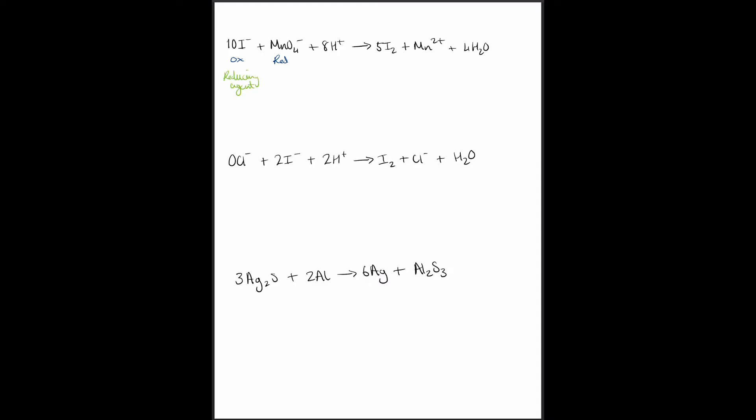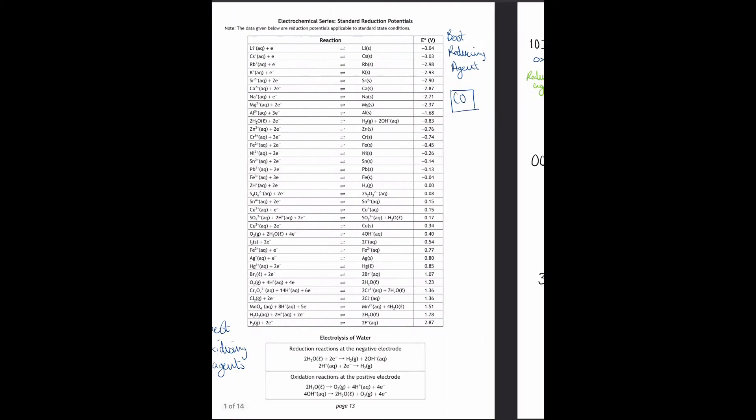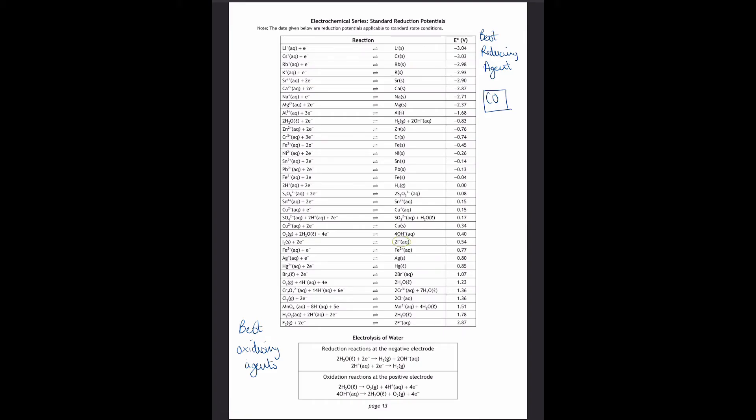If we look at some examples of redox reactions and try to identify the reducing and oxidizing agents: the iodide ions are becoming neutral iodine, which means they're losing electrons so they are being oxidized. If the iodide ions are being oxidized, that means the permanganate is being reduced. Therefore the iodide ions are the reducing agents and the permanganate is the oxidizing agent.